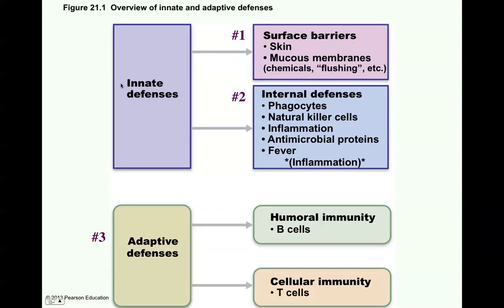This is figure 21.1, an overview of the innate and adaptive defenses. In your innate defenses — those you're born with — they act pretty quickly in response to invasion, but they're not real specific. Number one would be your surface barriers: skin and mucous membranes, including any chemicals present such as stomach acid, for example. And also some flushing effects — if something enters onto the mucous membrane, it's going to cause an increase in mucus.